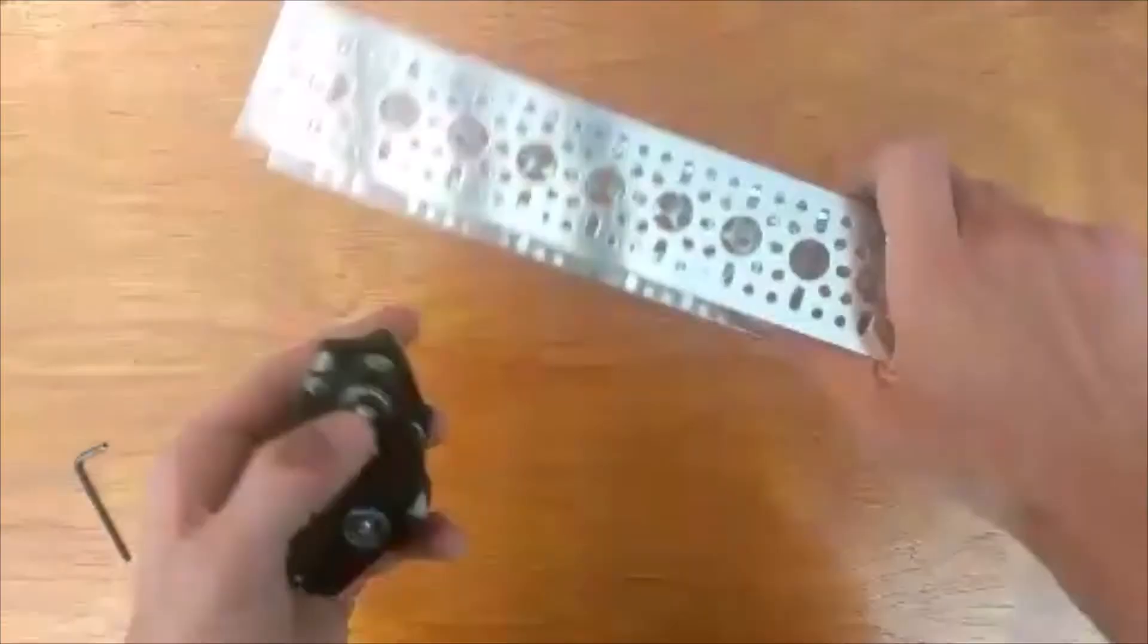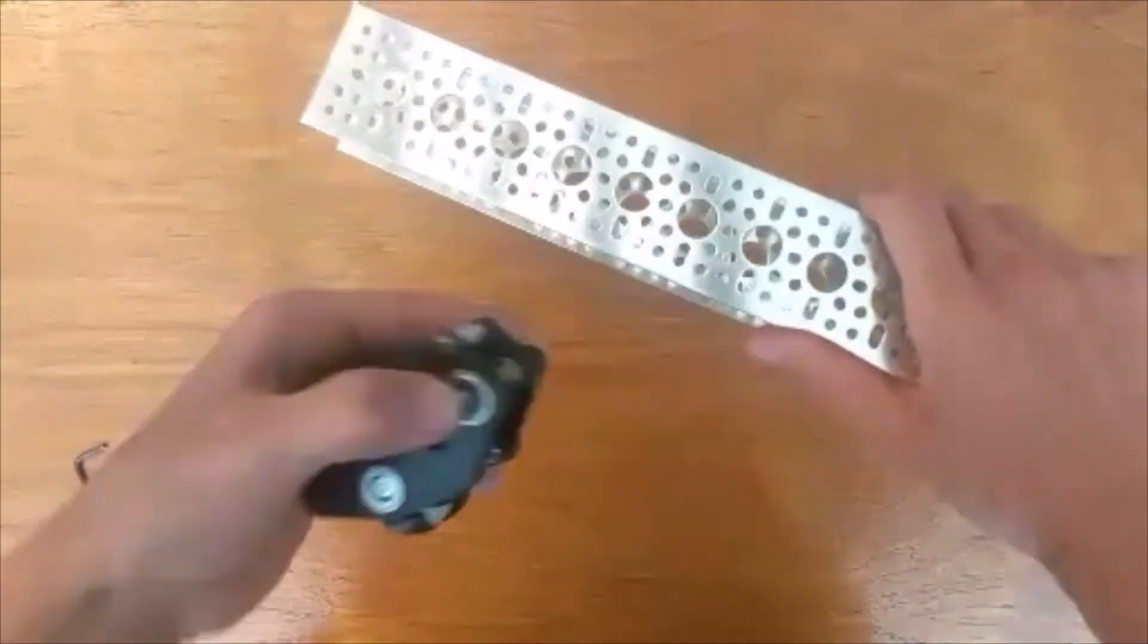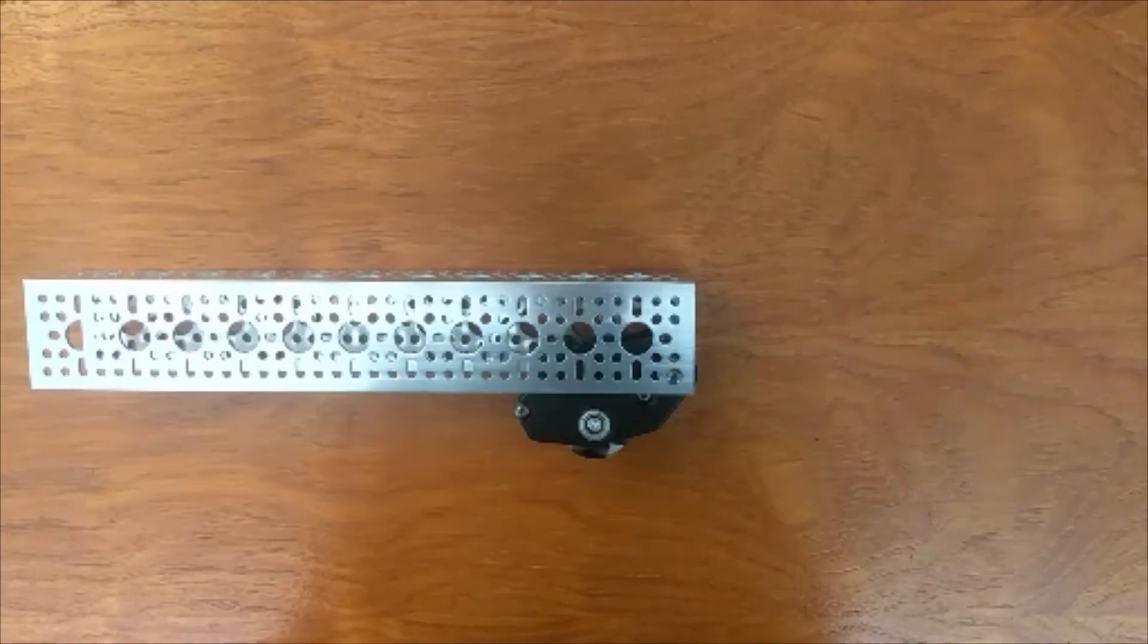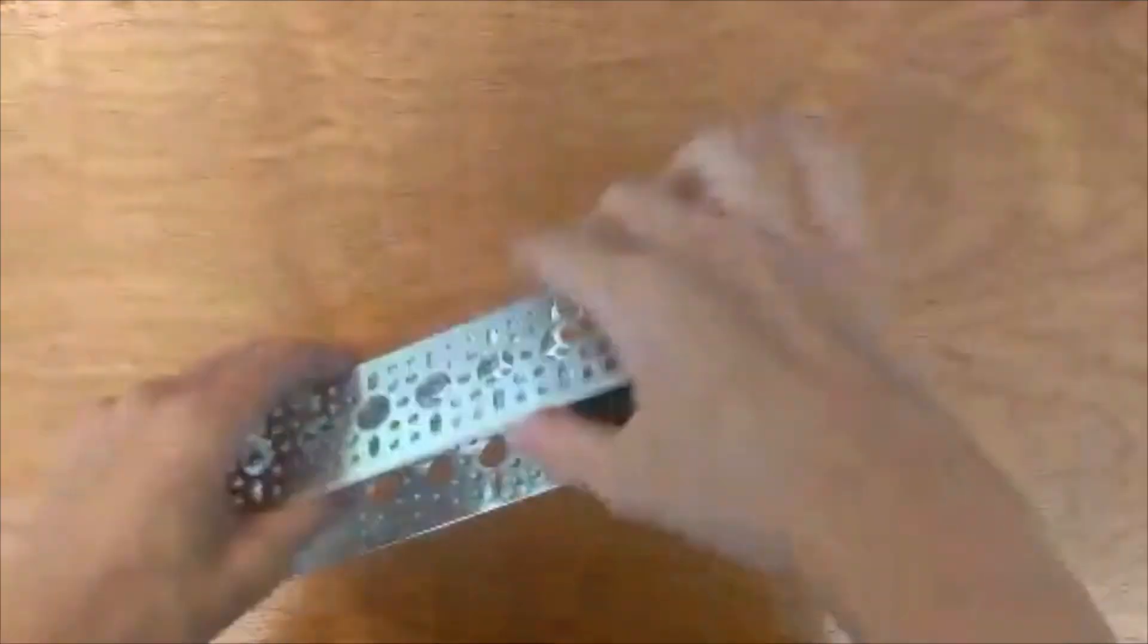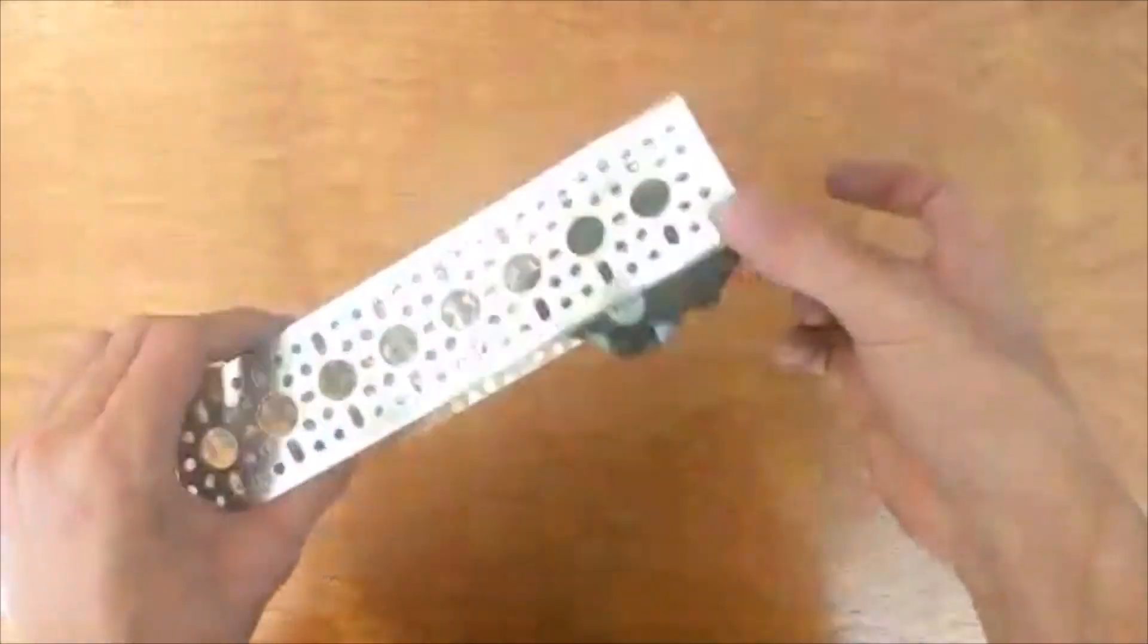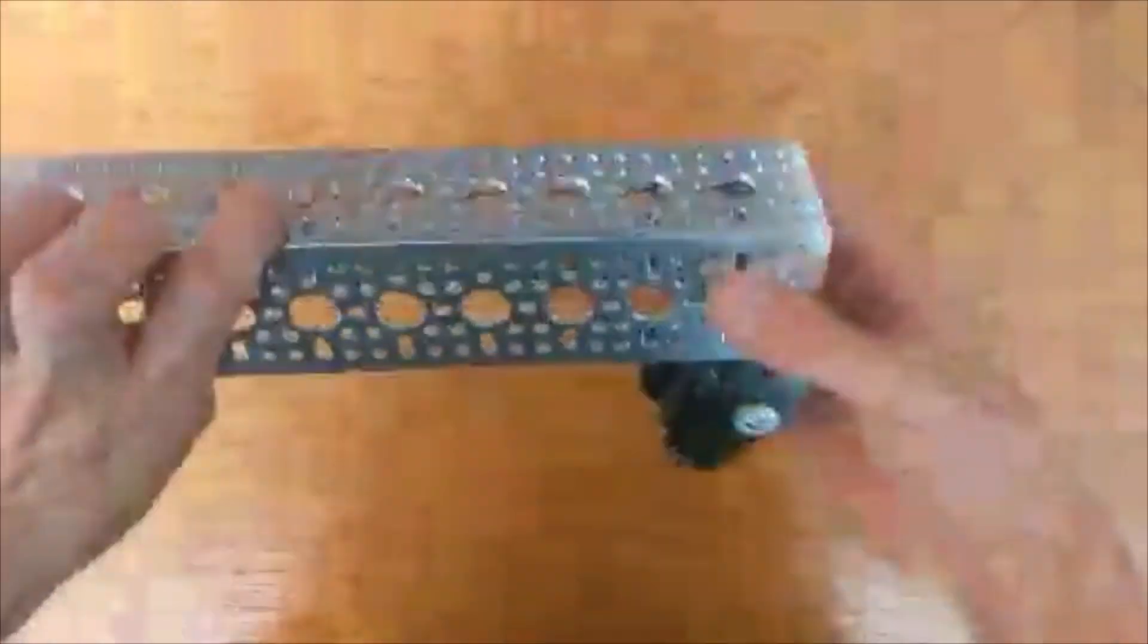Once it's like this, you can screw it in to really any set of holes in the channel, depending on how low you want your odometry to hang below the robot. Here I've screwed in the module into this hole on both sides, and it should swing pretty freely.